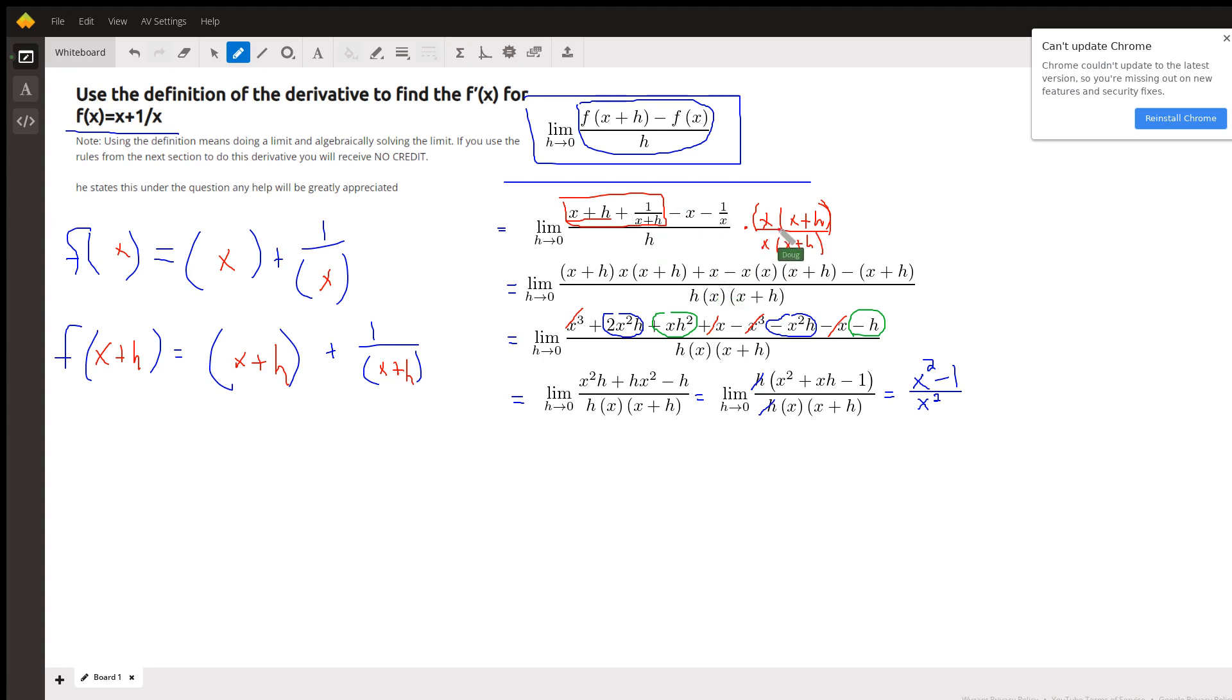When I take this LCD times the minus x, I have minus x times x times x plus h. And when I take the LCD times minus 1 over x, the x's cancel out and I have minus the factor that remains, the quantity x plus h.